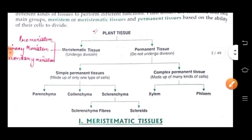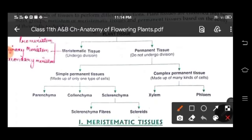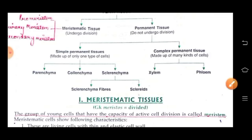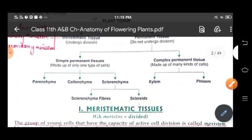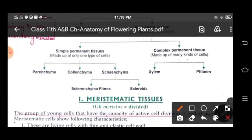Here is a flow diagram of plant tissue. Plant tissue is categorized into two parts: meristematic tissue and permanent tissue. Meristematic tissue undergoes division, whereas permanent tissue does not. Permanent tissues are further divided into simple permanent tissues and complex permanent tissue. Simple permanent tissue is divided into three categories: parenchyma, colenchyma, and sclerenchyma — where sclerenchyma is again divided into sclerenchyma fibers and sclereids. Complex permanent tissue is divided into xylem and phloem, which are also known as vascular tissue.